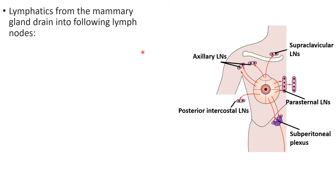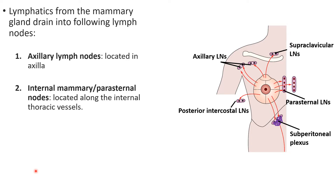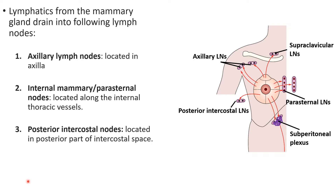Lymphatics from the mammary gland drain into the following lymph nodes. The most important group is the axillary lymph nodes, which are obviously located in the axilla. Second is the internal mammary or parasternal lymph nodes, which are located just lateral to the sternum along the internal thoracic vessels.